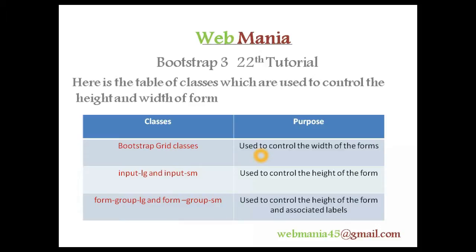Bootstrap grid classes are used to control the width of forms. If we want to control the height of forms, we have to use the classes input-lg and input-sm. These classes are used to control the height of the form — in other words, input-lg and input-sm are used to control the height of input elements. The classes form-group-lg and form-group-sm are used to control the height of forms and their associated labels.